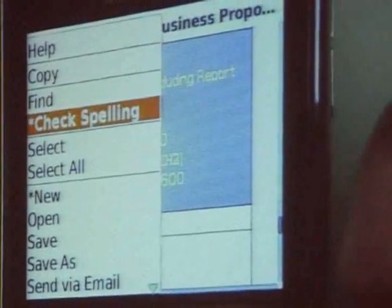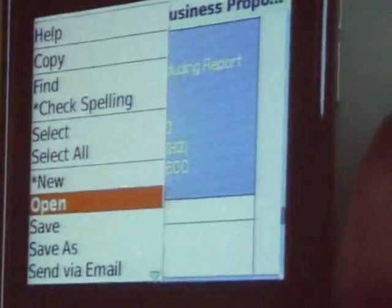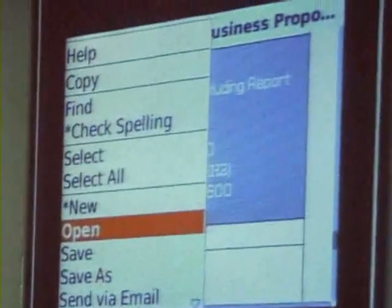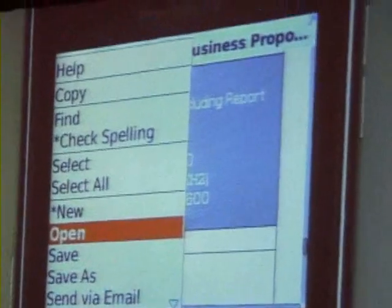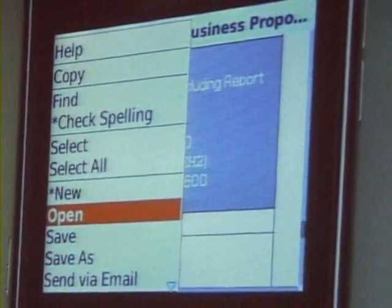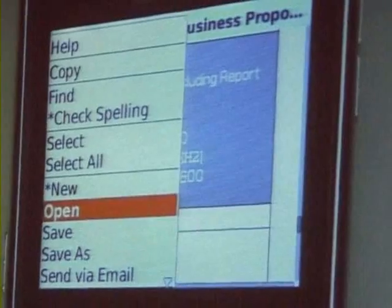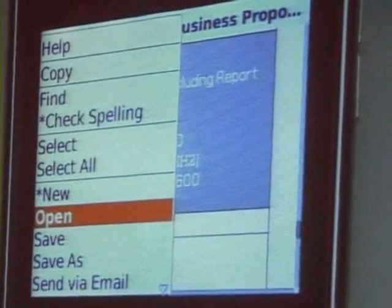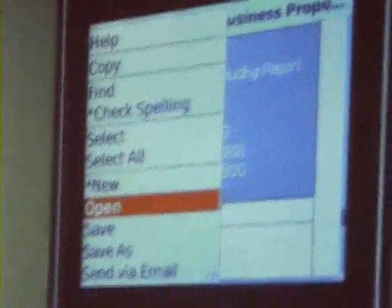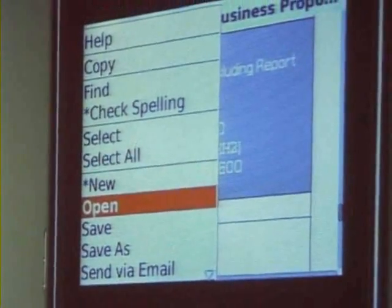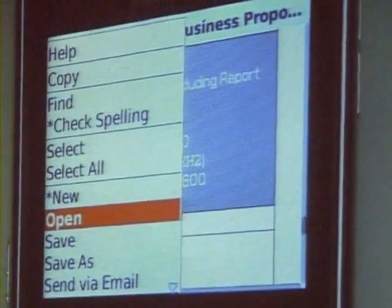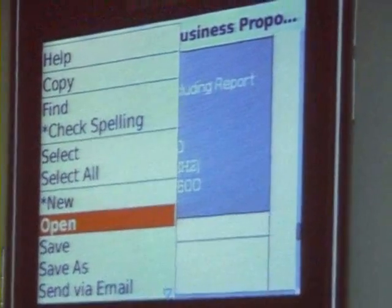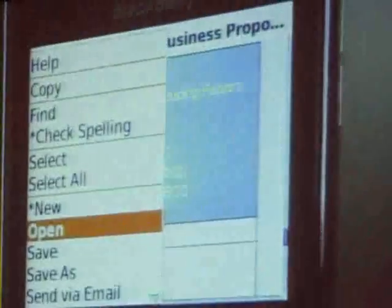One other thing I want to mention — you'll see some items that have a little star next to them. Those are features in our premium edition that we're going to be launching next month. Things like spell checking, being able to create new files, create new tables in a Word document, track changes, accept and reject, advanced character and paragraph formatting — all premium features you can upgrade to if you choose.